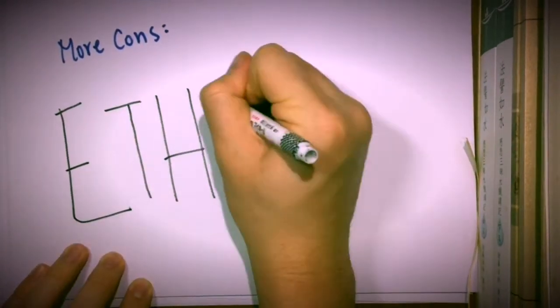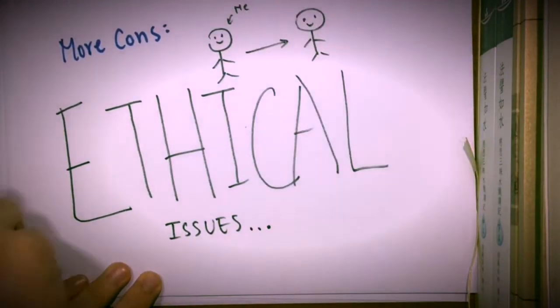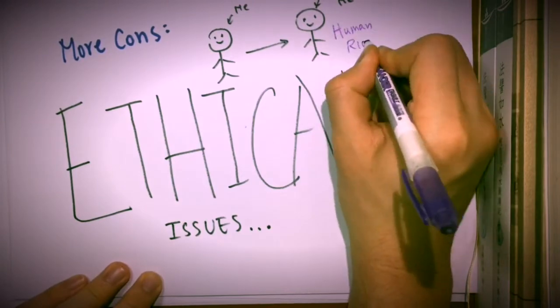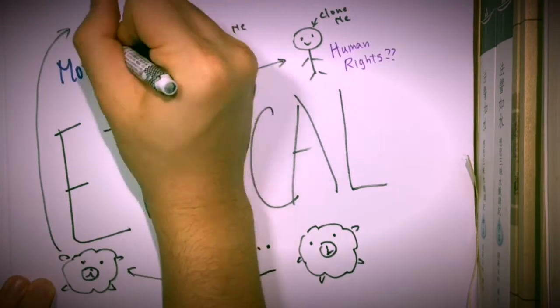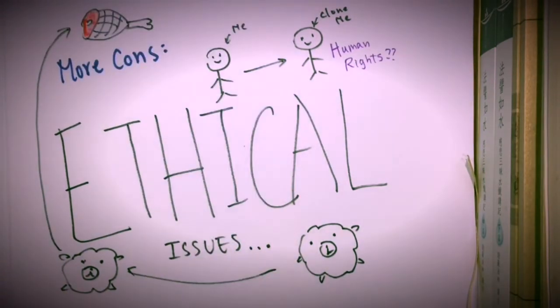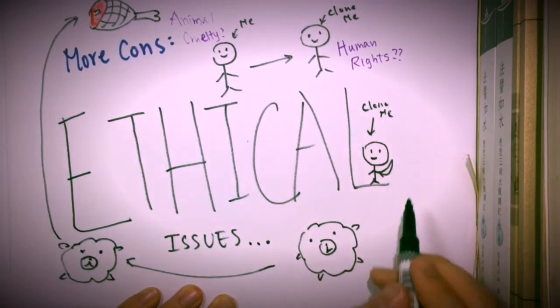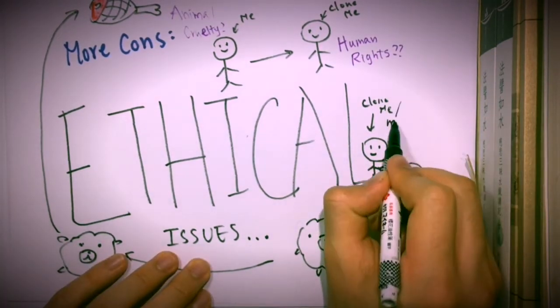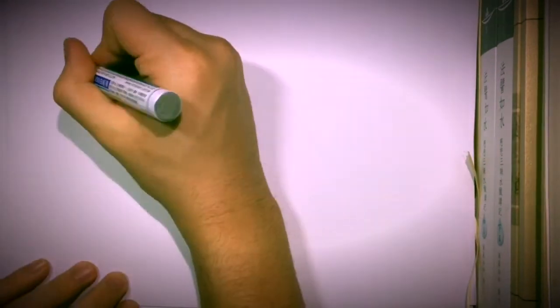The biggest issue is that it will bring up so many ethical problems, such as does the cloned human have human rights? Will doing experiments on cloned animals be animal cruelty? Or will people use their clone as a decoy for crime? These are problems that cloning will bring to us.